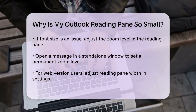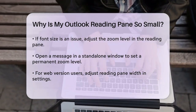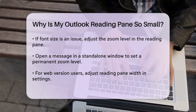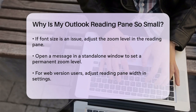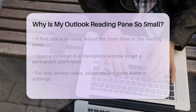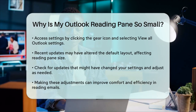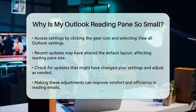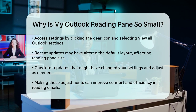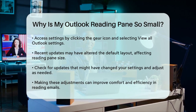Additionally, if you're using the web version of Outlook, you can adjust the Reading Pane width by going to the Settings. Click on the gear icon in the top right corner, select View all Outlook settings, then go to Mail and Layout. Here, you can use the slider under Reading Pane width to adjust the size, and click Save to apply the changes.